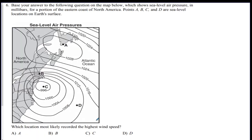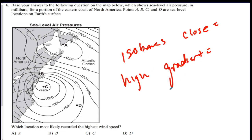Number six, which location most likely recorded the highest wind speed? Okay, remember, isobars, when they're close, that means you're going to have a high gradient, which means you're going to have fast winds. So it looks like B has them where they're really close, so that's the best answer.